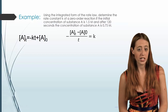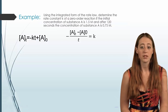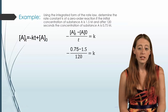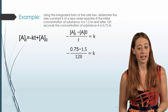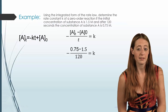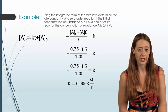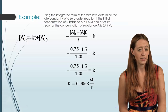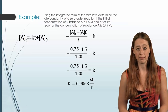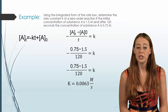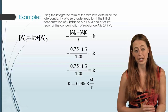My final concentration at time t is 0.75, minus my initial concentration of 1.5, over my time of 120 seconds. When we solve this, we get 0.0063 molarity per second. You'll see why the time unit matters: I could have used two minutes instead, which would change my number but also change my unit. The important part is that whatever unit you use, you write that unit down for your k.